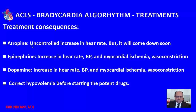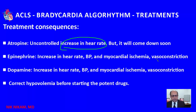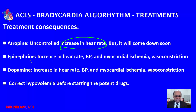Let's talk about some side effects of these drugs. Atropine can cause an uncontrolled increase in heart rate, though the rate generally comes down over several minutes. Epinephrine not only increases heart rate but also increases blood pressure, myocardial ischemia, and causes peripheral vasoconstriction — a disadvantage in patients with acute coronary syndrome. Similarly, dopamine increases heart rate and blood pressure, increases myocardial ischemia, and causes peripheral vasoconstriction. Therefore, before starting epinephrine or dopamine, we should correct hypovolemia to get the maximum benefit.